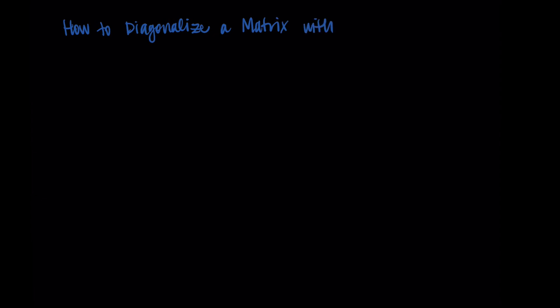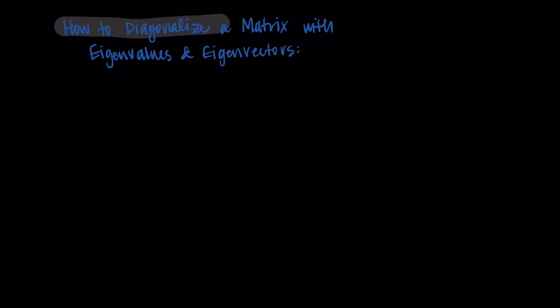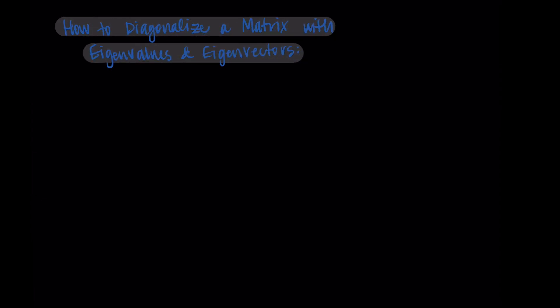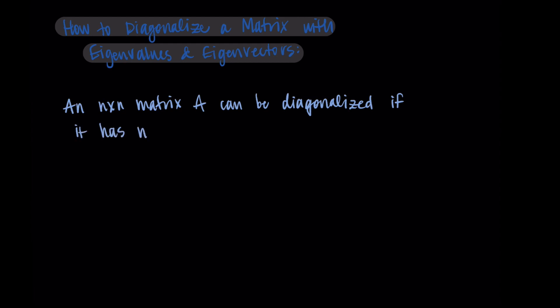Hi, welcome back. In this video we're going to talk about how we diagonalize a matrix using the eigenvalues and the eigenvectors. I'm going to start with the main conclusion or theorem of this video and then we'll go through a process to make sure we believe why it works. We say that an n by n matrix A can be diagonalized as long as it has n distinct eigenvalues, lambda 1 through lambda n.